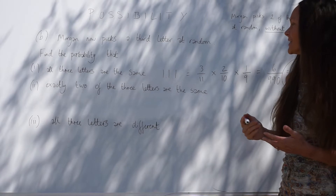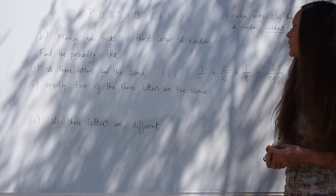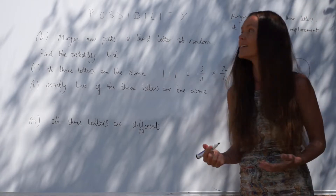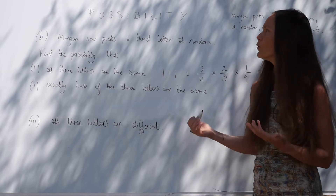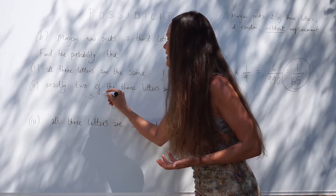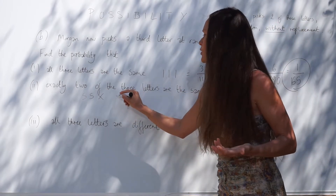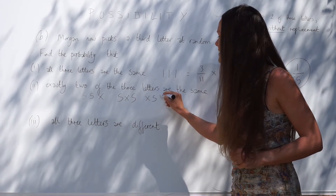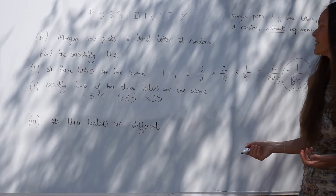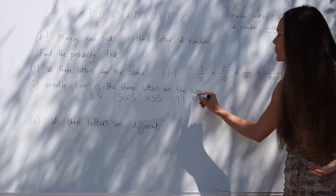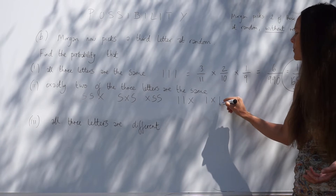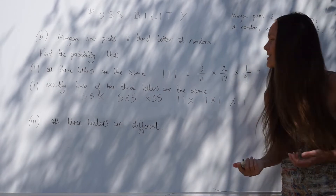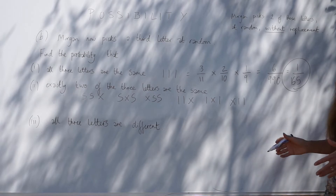For part two, find the probability that exactly two of the three letters are the same. The letters we're considering could be either S or I, as they're the only letters that occur at least twice. Morgan could pick: S, S, other; or S, other, S; or other, S, S. For the I's: I, I, other; or I, other, I; or other, I, I. So there are six scenarios altogether.